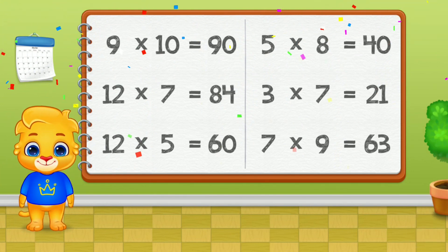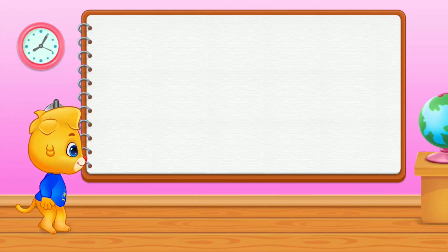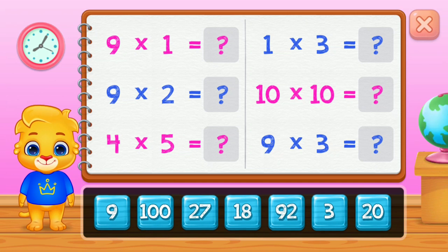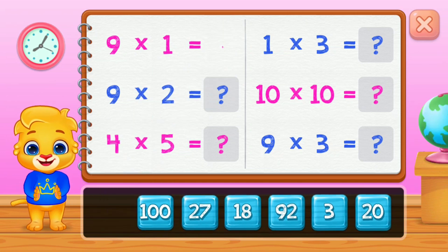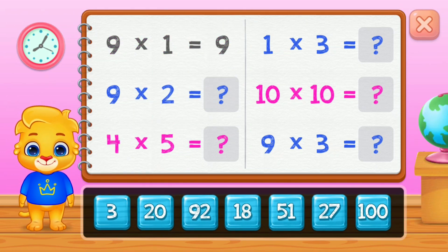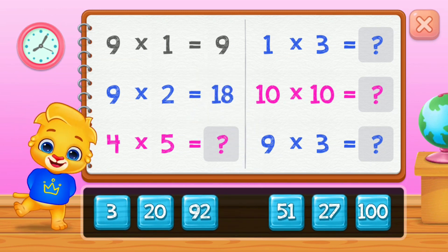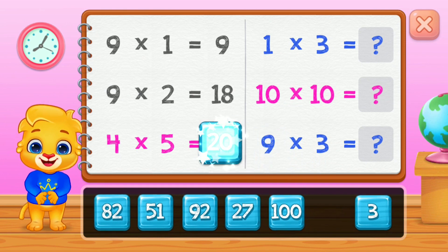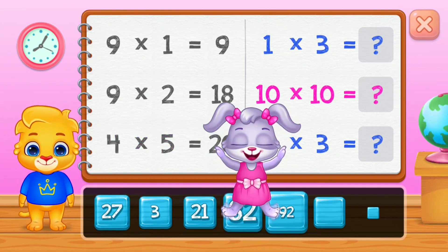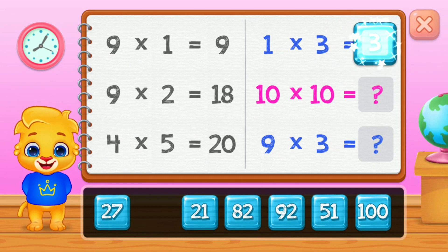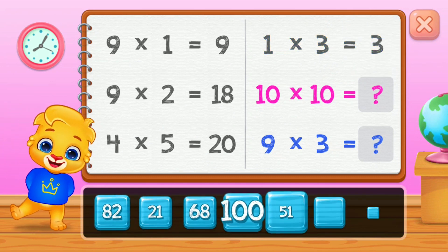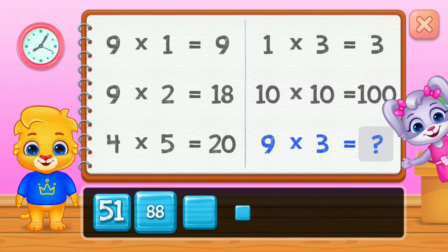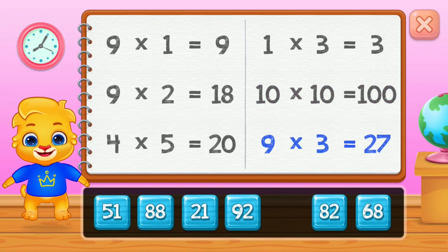Three! Two! Nine! Eighteen! Twenty! Three! One-hundred! Well done! Twenty-seven! Twenty-seven! Three!